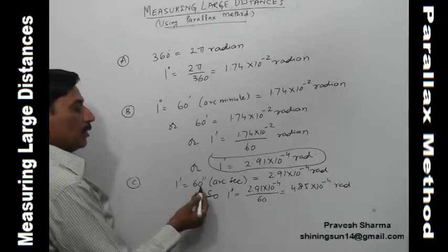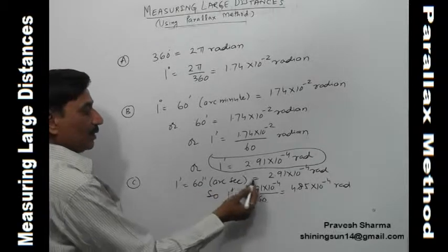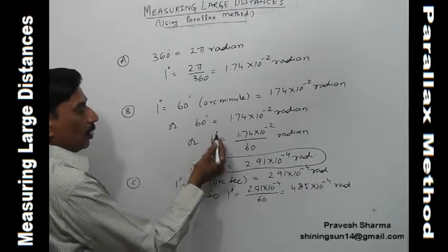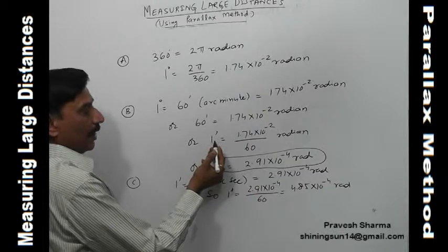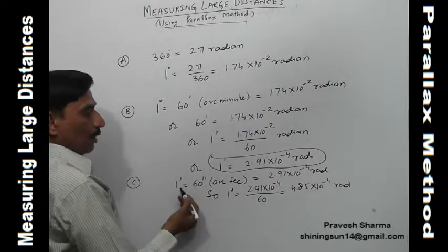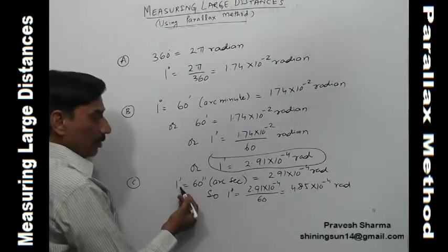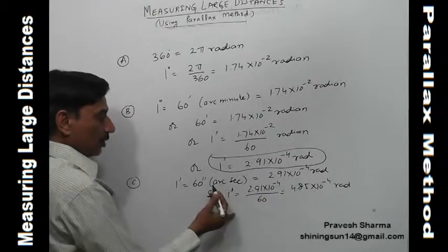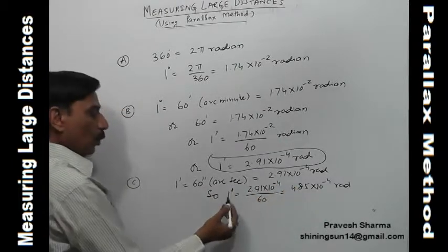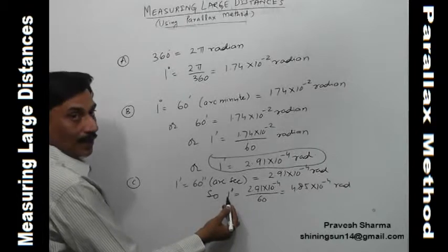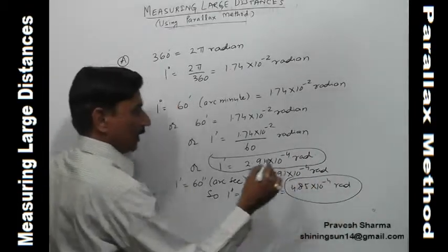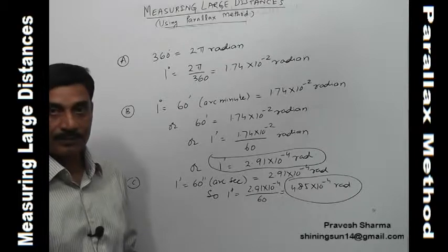Since 1 arc minute equals 60 arc seconds, and 1 arc minute equals 2.91 × 10⁻⁴ radians, we get 60 arc seconds equals 2.91 × 10⁻⁴ radians. Therefore, 1 arc second equals 4.85 × 10⁻⁶ radians.